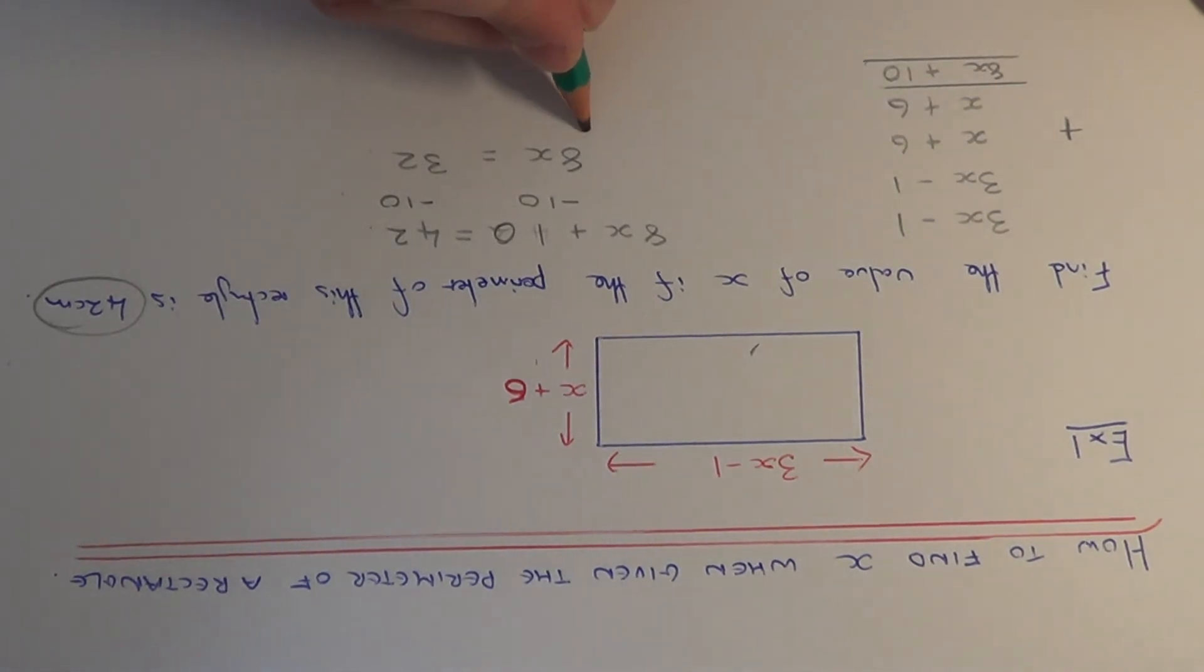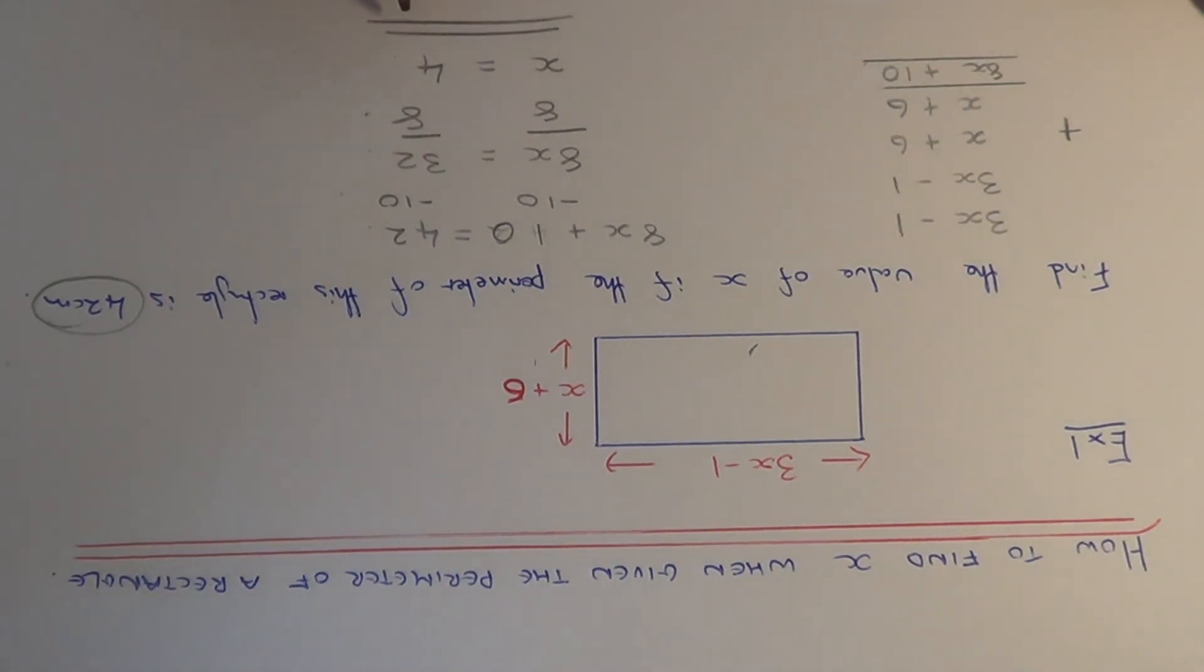Then we can get rid of the 8 by dividing both sides by 8, and this will give us x is equal to 4. Thanks for watching.